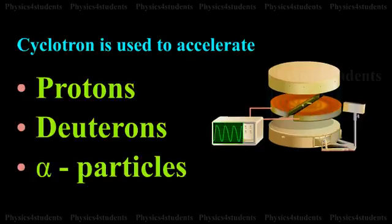Cyclotron is used to accelerate protons, deuterons and alpha particles.